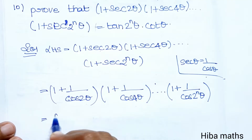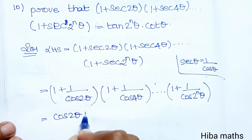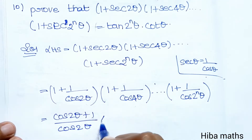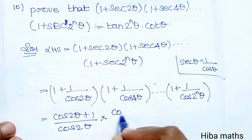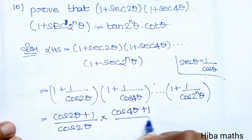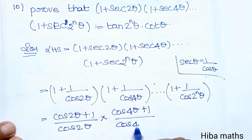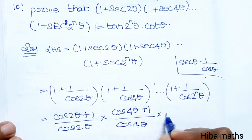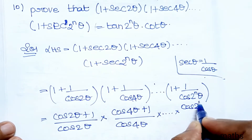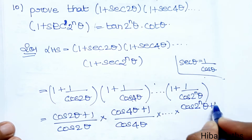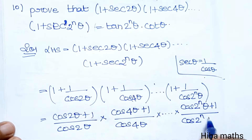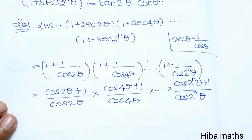Now combining each factor: (cos2θ + 1)/cos2θ · (cos4θ + 1)/cos4θ · ... · (cos2ⁿθ + 1)/cos2ⁿθ.